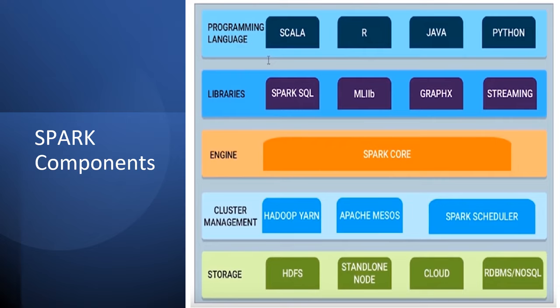The main Spark components are Spark Core, Spark SQL, MLlib, GraphX, and Streaming. Spark Core is the engine at the center. Languages supported include Scala, R, Java, and Python. Libraries include Spark SQL, MLlib, GraphX, and Streaming. Cluster management is handled by Hadoop YARN, Apache Mesos, and Spark Scheduler. Storage components include HDFS, Standalone Node, Cloud, RDBMS, and NoSQL.